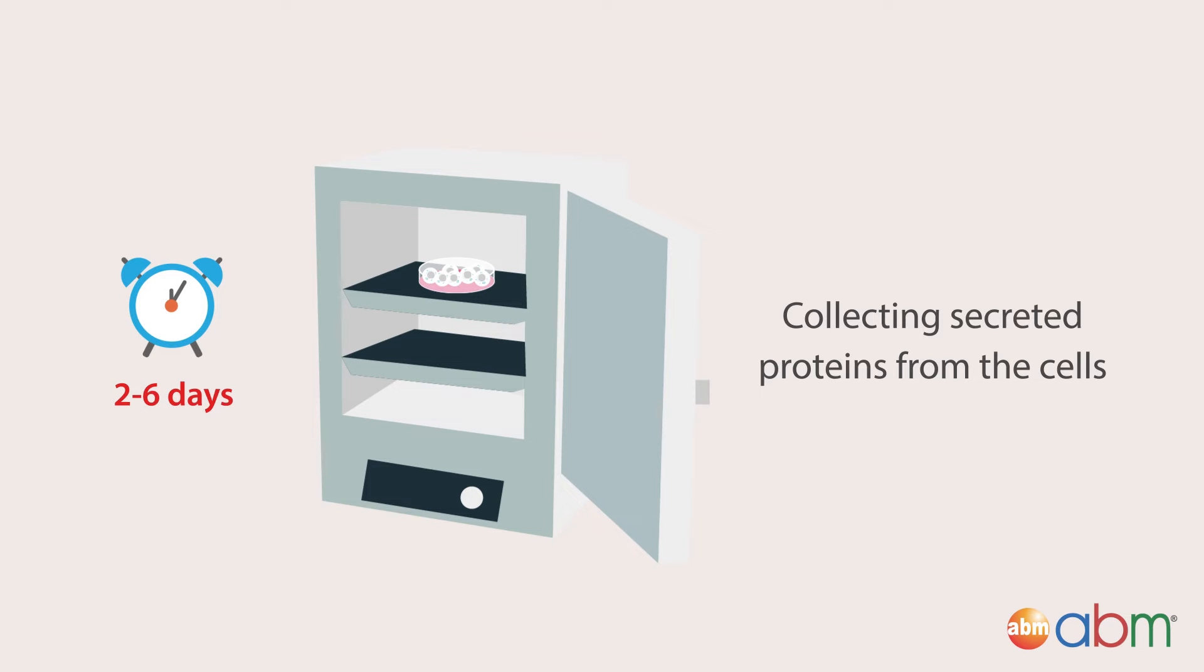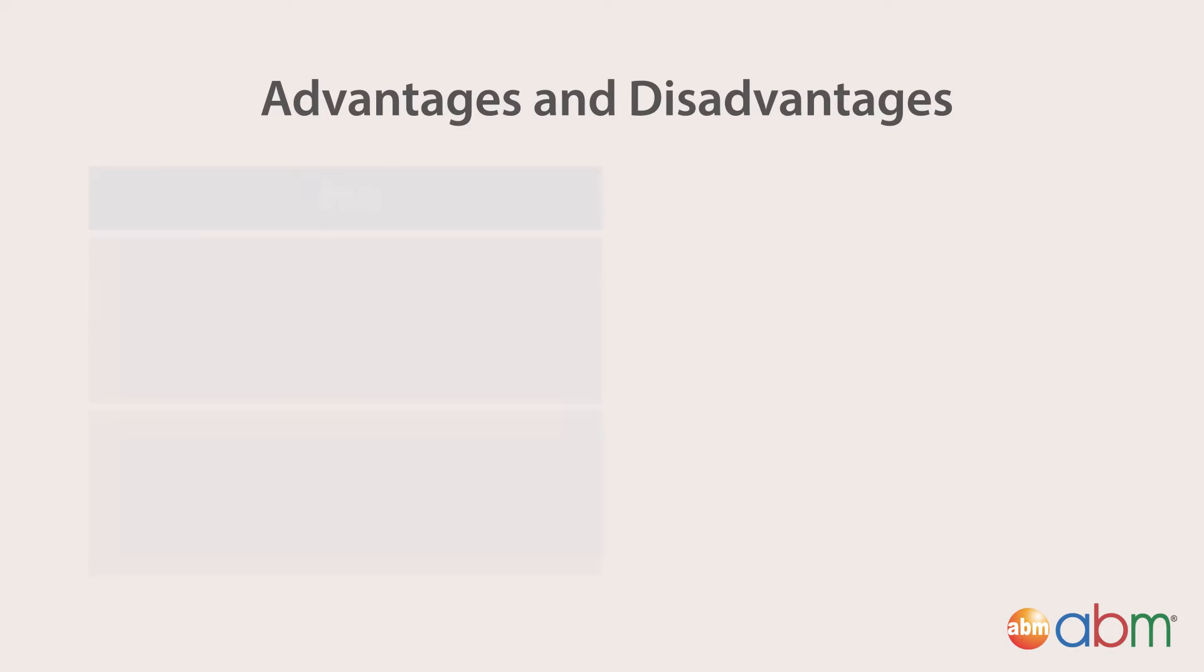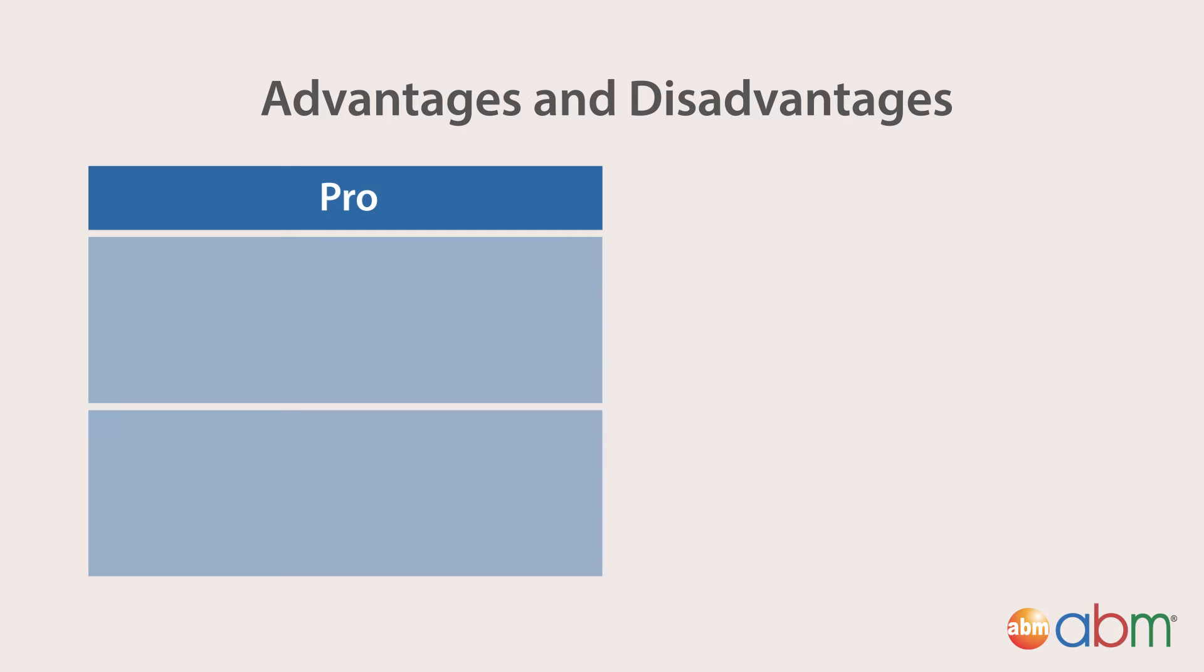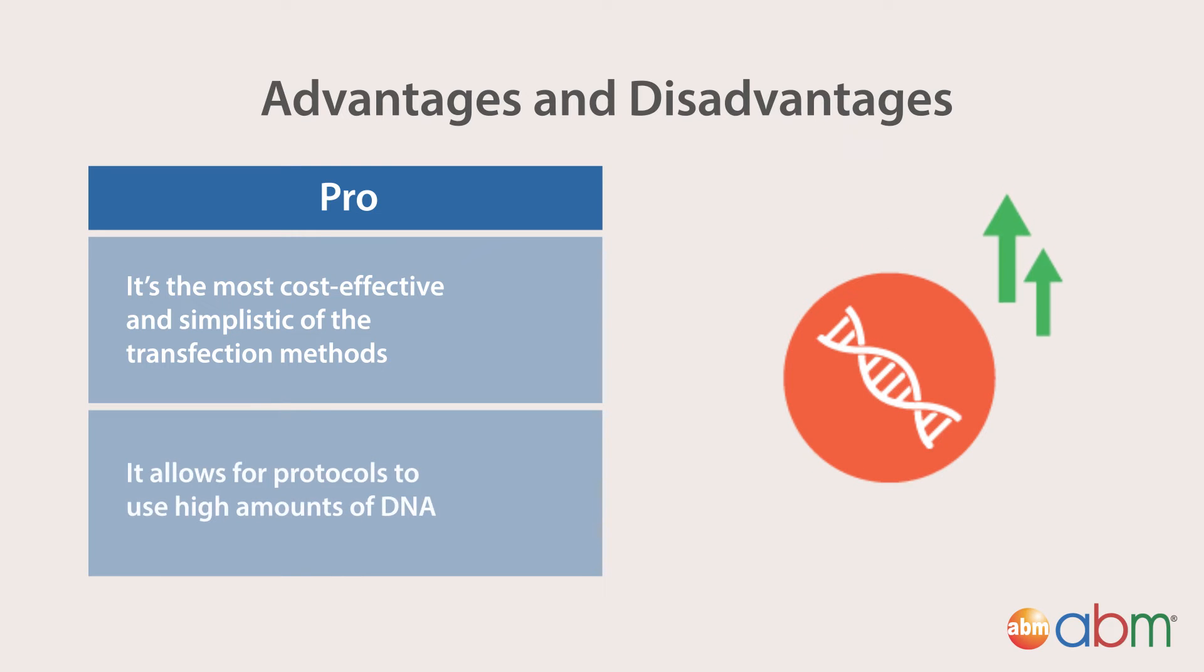Advantages and disadvantages. Pro: calcium phosphate transfection is the most cost-effective and simplistic of the transfection methods. It allows the protocol to use high amounts of DNA.